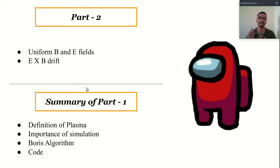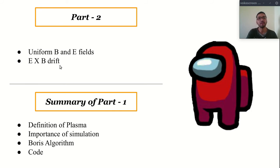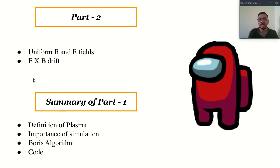Hello friends and welcome to the second part of this video tutorial series on plasma physics. In this part, we are going to discuss the trajectory of charged particles in uniform magnetic and electric fields. We will also discuss E cross B drift. And before we start, here is the summary of part 1.